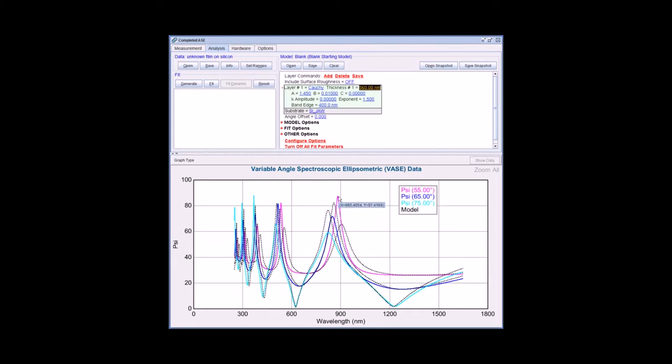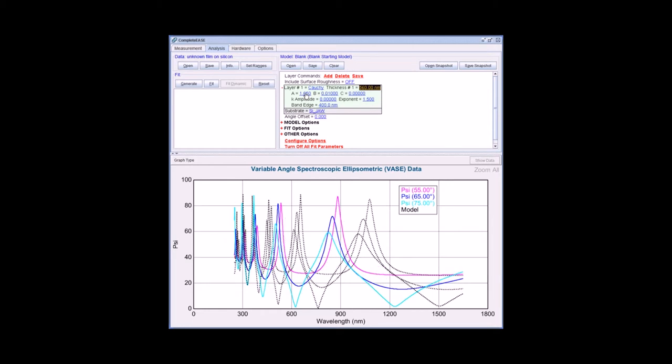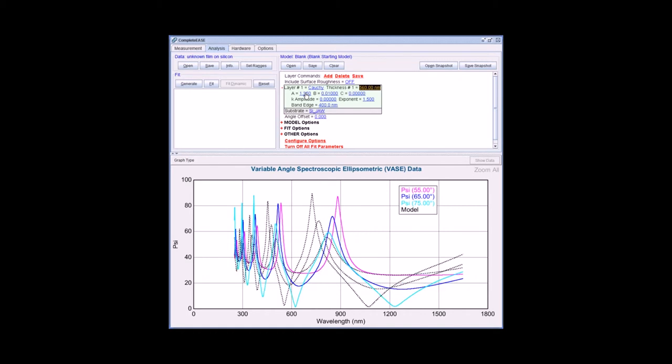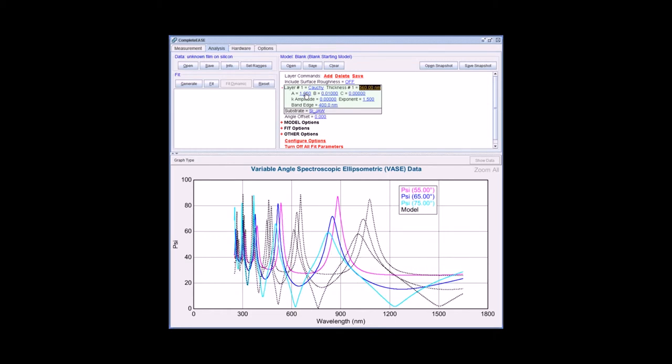The peaks are still off and this is related to the index difference between the experimental data and my model guess. The Cauchy coefficient A is approximately equal to index at long wavelengths. If I hold my mouse over this value and press the shift key, I can scroll up or down to adjust this value. You'll see the peak heights in the model generated data adjust accordingly. Somewhere around A equals 1.65 looks like the peak heights are a much better match.